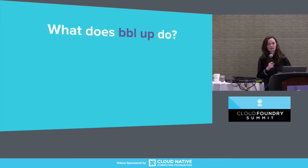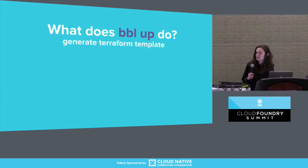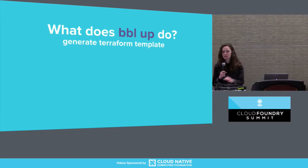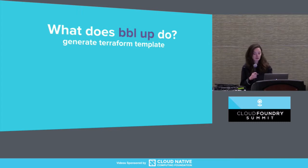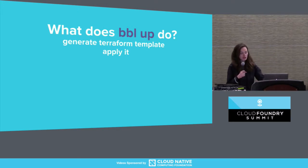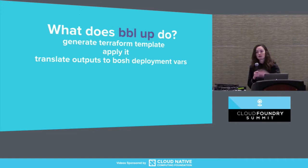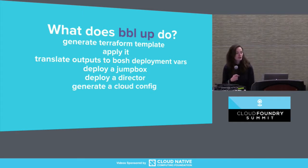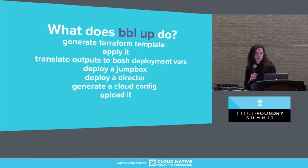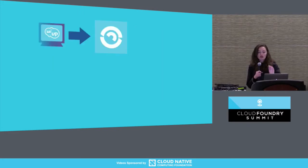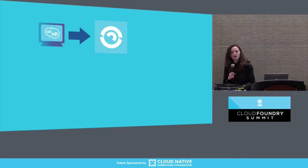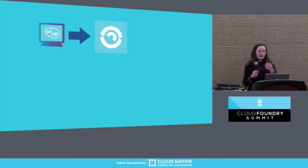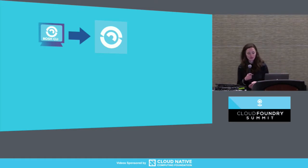What is BBL actually doing? In the first command, `bbl up`, it starts by generating a Terraform template. This Terraform template will create network resources, security groups, and potentially load balancers for either a Cloud Foundry or a Concourse deployment. It'll apply that Terraform template to create those resources. Then it will translate the outputs from the Terraform apply stage to BOSH deployment variables in order to deploy your jumpbox and then your director behind that jumpbox. And finally, it will generate a cloud config for that BOSH director and upload it.